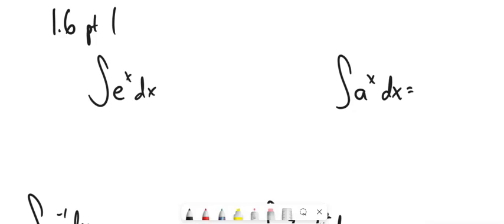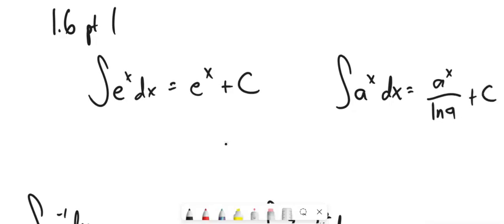A couple things to know. You already know that e to the x is its own derivative, so the integral of e to the x is also itself plus some constant. Similarly, if it's a general base a instead of base e, it's a to the x divided by the natural log of a, plus some constant.